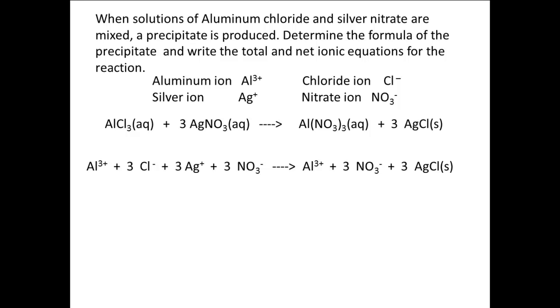To go from the total ionic equation to the net ionic equation, we need to eliminate the spectator ions. Remember that spectator ions are ions that are the same in the reactants and products in three ways: one, they have the same formula and subscripts; two, they have the same charge; and three, they have the same state.